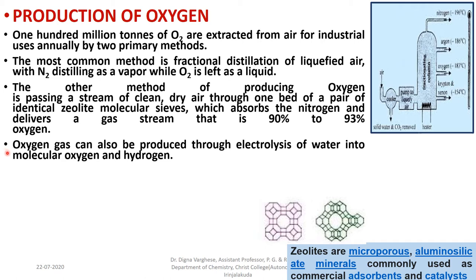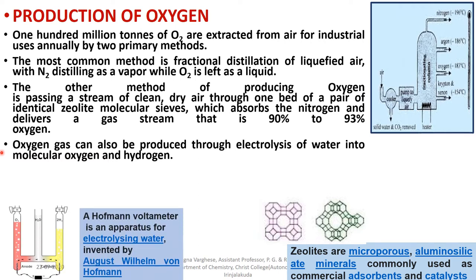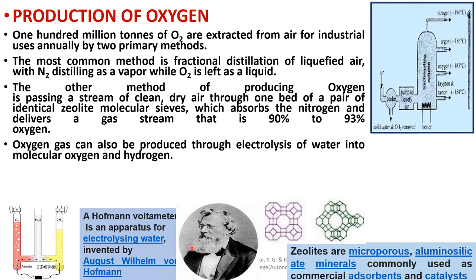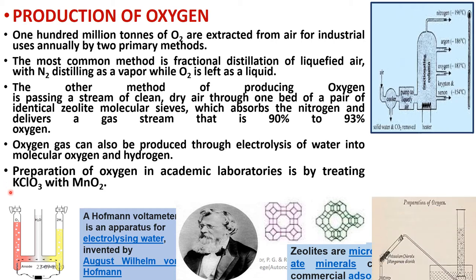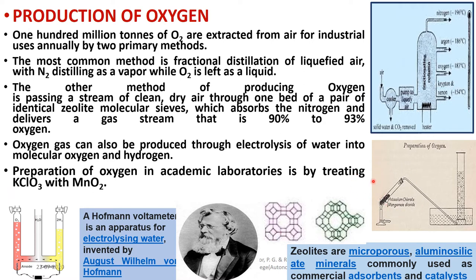Oxygen gas can also be produced through electrolysis of water into molecular oxygen and hydrogen. A Hofmann voltameter is an apparatus for electrolyzing water, invented by August Wilhelm von Hofmann. In academic laboratories, the most important preparation of oxygen is by treating potassium chlorate with manganese dioxide to obtain oxygen gas.